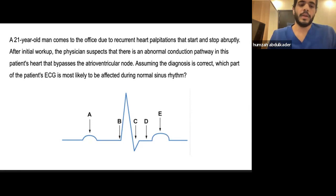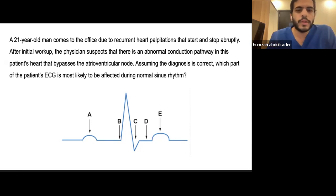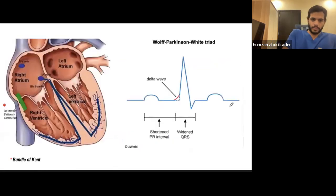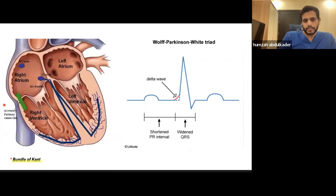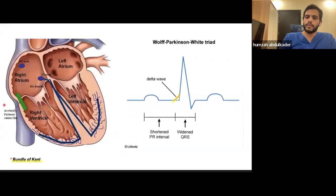The correct answer is B. The disease here is Wolff-Parkinson-White syndrome, and that accessory pathway is known as the Bundle of Kent. What happens is that this accessory pathway causes the ventricle to contract a little earlier than normal, which produces the delta wave — corresponding to answer B on the ECG. That delta wave causes shortening of the PR interval and widening of the QRS complex.